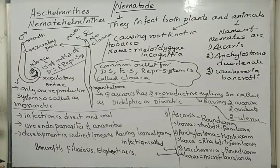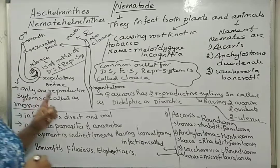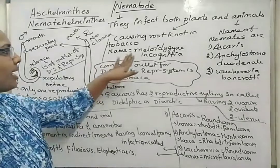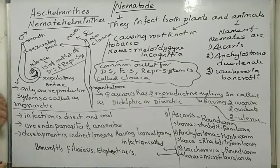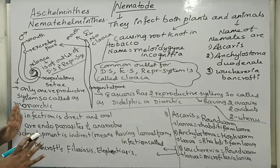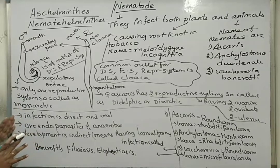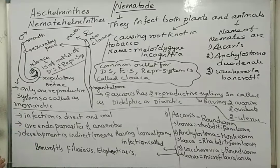These are a few examples regarding nematohelminthes that cause infections in plants and animals. For plants, the example is Meloidogyne incognita. For animals, three examples were discussed. Since nematodes are endoparasites, they absorb nutrients directly. In the case of female Ascaris, there is no cloaca.